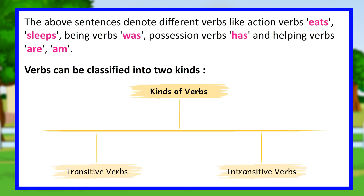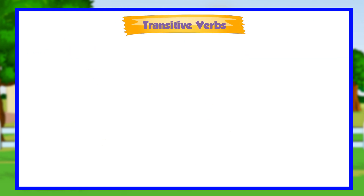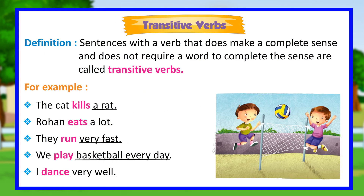The above sentences denote different verbs, like action verbs (eats, sleeps), being verbs (was), possession verbs (has), and helping verbs (are, am). Verbs can be classified into two kinds: transitive verbs and intransitive verbs.